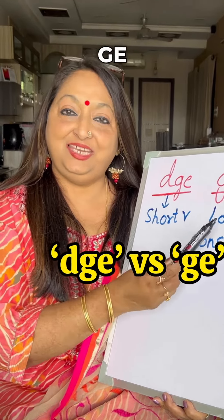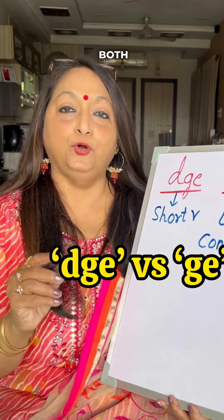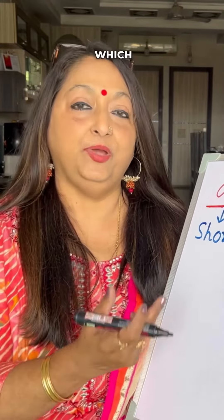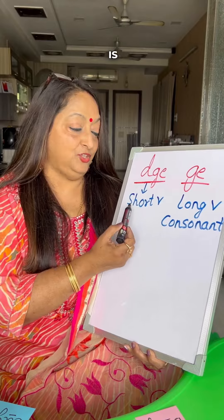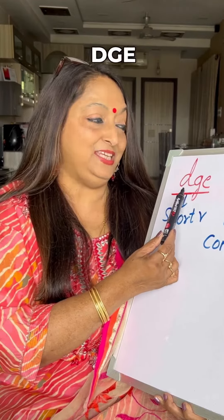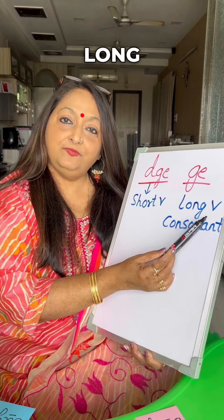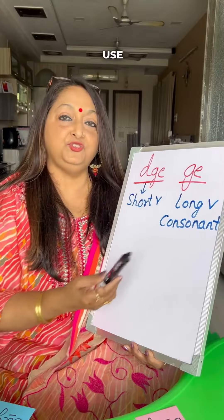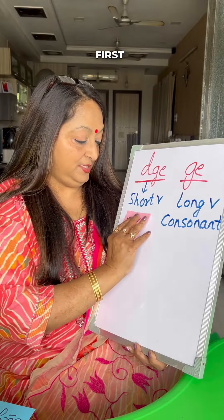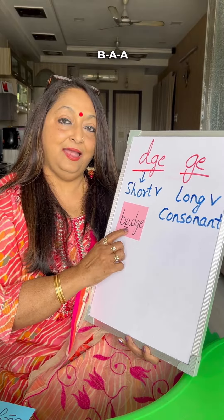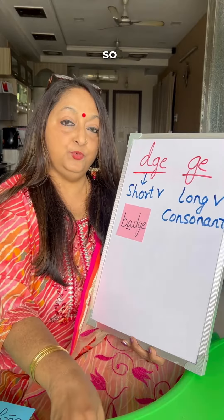DGE and GE both make the same J sound, but how do we know when to use which in a word? When there is a short vowel sound in a word, we use DGE. When there is a long vowel sound or a consonant, we use GE. The first word is 'badge' — short vowel sound, so we use DGE.